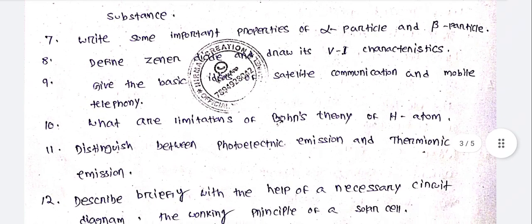Let's look at the second question. Write some important properties of alpha particle and beta particle. Define zener diode and draw its VI characteristics. Give the basic idea of satellite communication and mobile telephony.